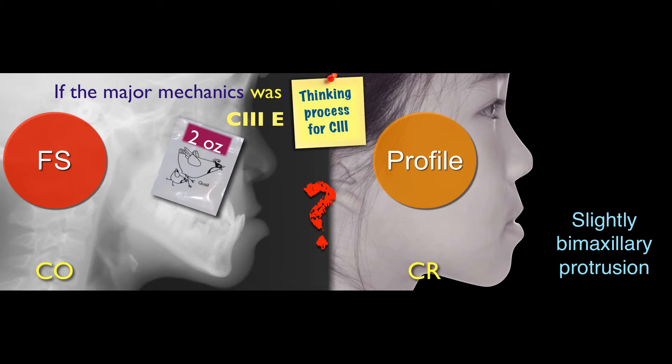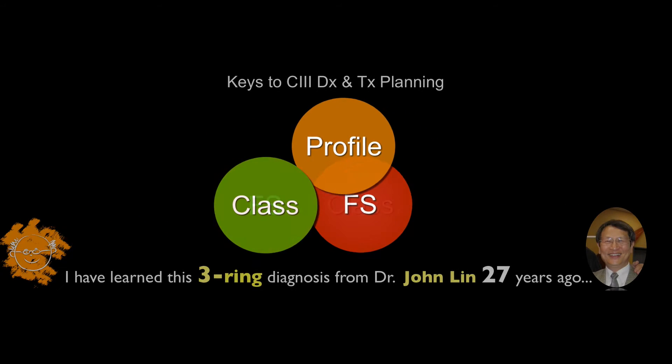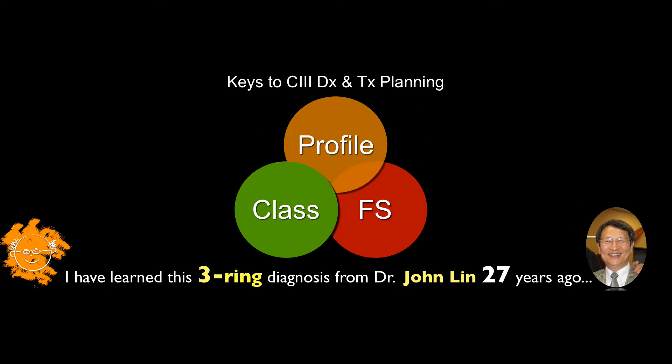How will you manage this case? Class 3 elastic? If you're using Class 3 elastic, you will end up with bimaxillary protrusion. This is the 3-3 circle — this is so helpful. I was so lucky to learn this 3-3 circle from Dr. John Lee, 27 years ago. I find this very helpful and I encourage you to adapt it to your daily practice.